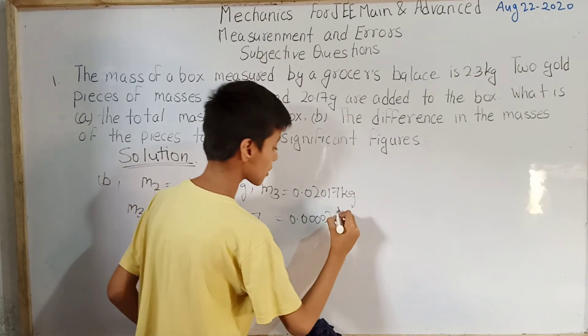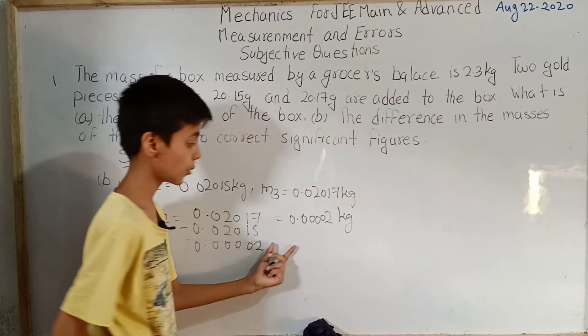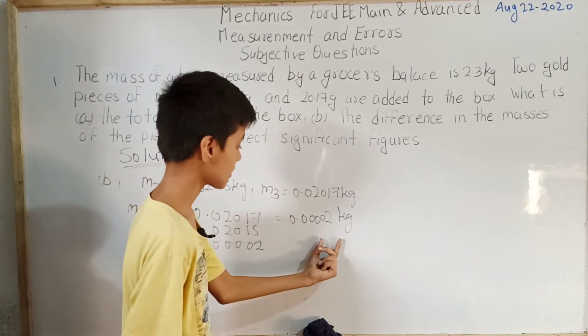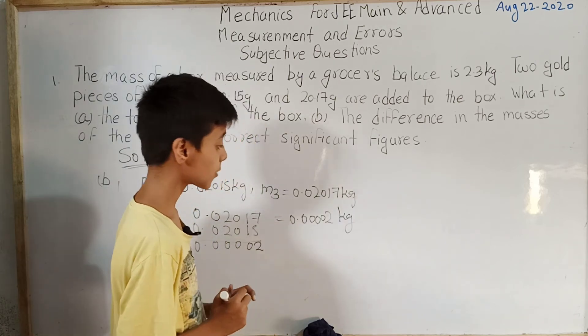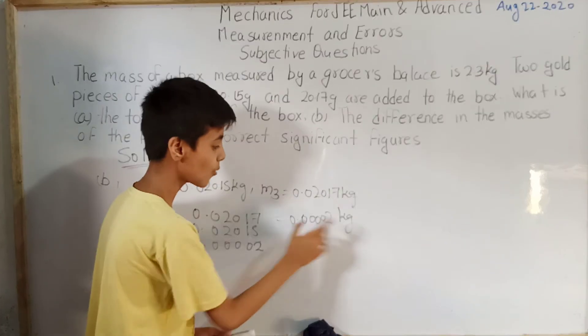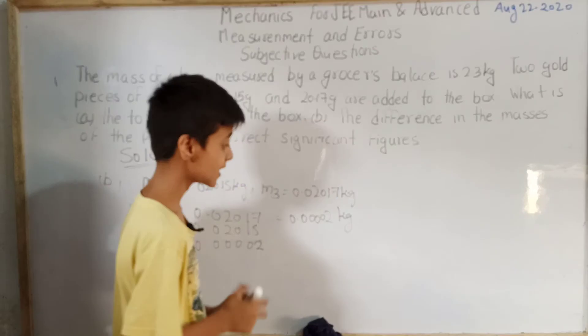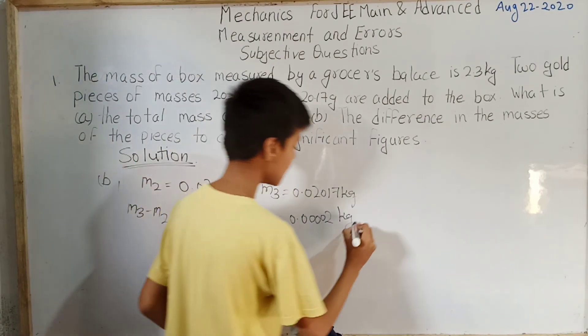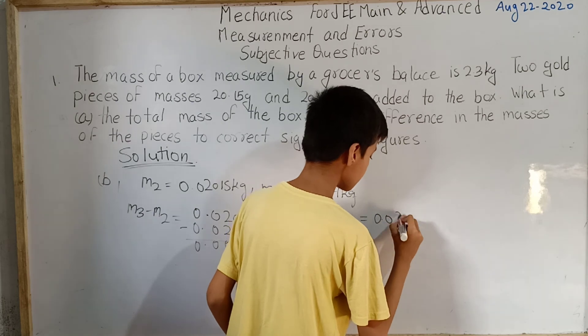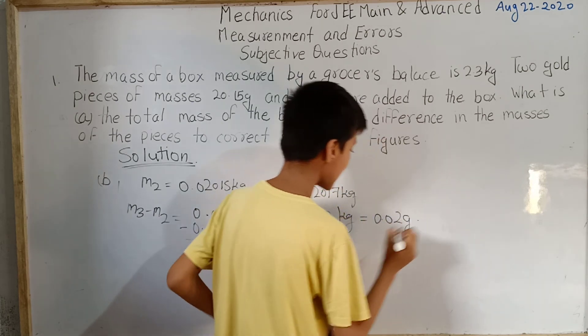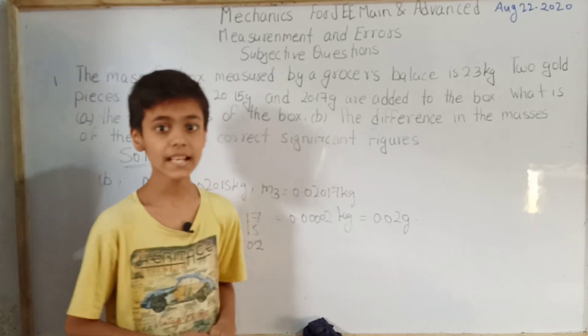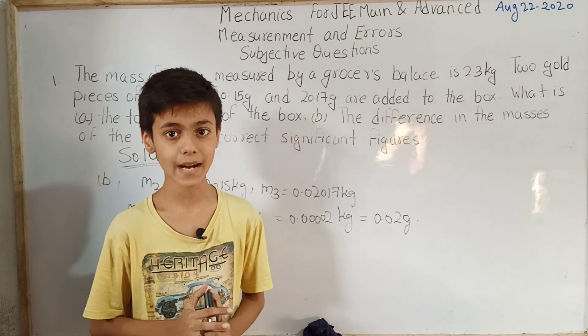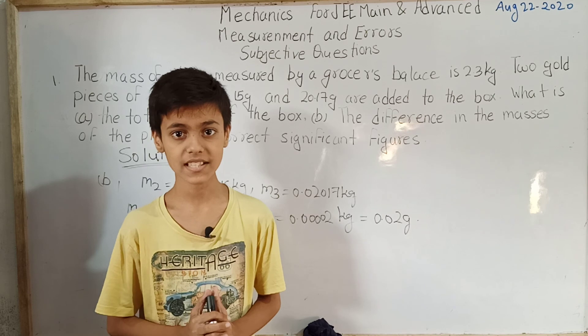This is the answer, 0.00002 kg. But if we want we can convert it into gram because it is a very small unit. So finally we'll get 0.02 gram. So the answer for part (b) is 0.02 gram. If you haven't subscribed this channel, please subscribe this channel, thank you.